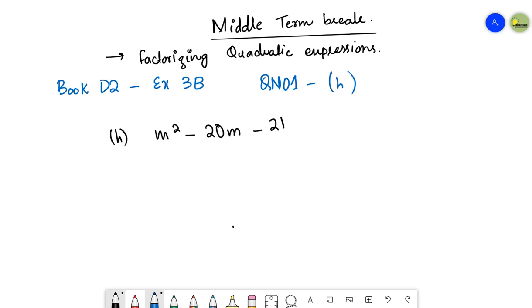The given expression is m² - 20m - 21. First, we have to see the coefficient of m². That is 1. Then we have to see the constant, that is -21.